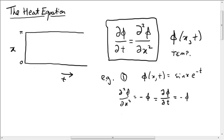And when t equals zero, this factor of e to the minus t is just one. So we get phi of x comma zero equals sine x.